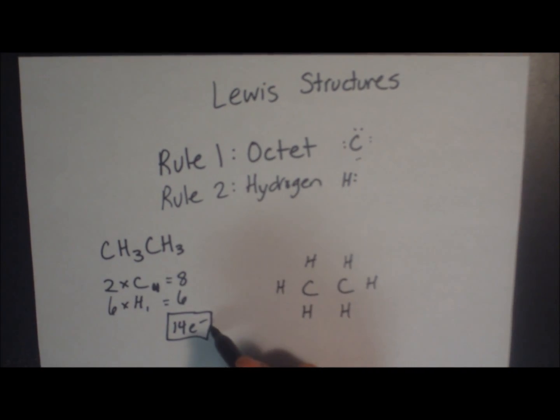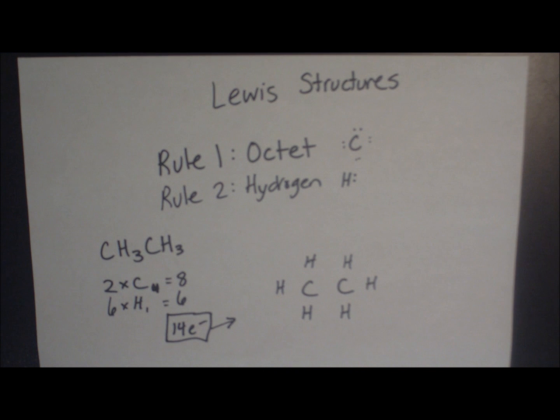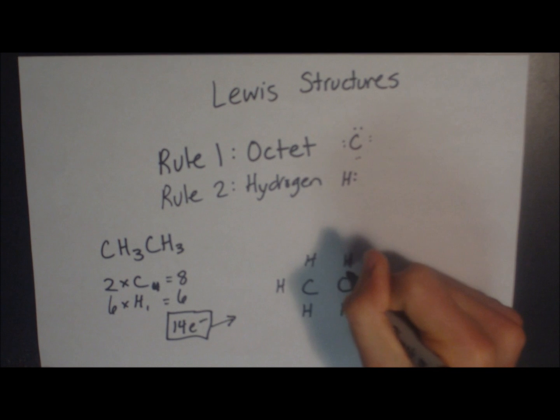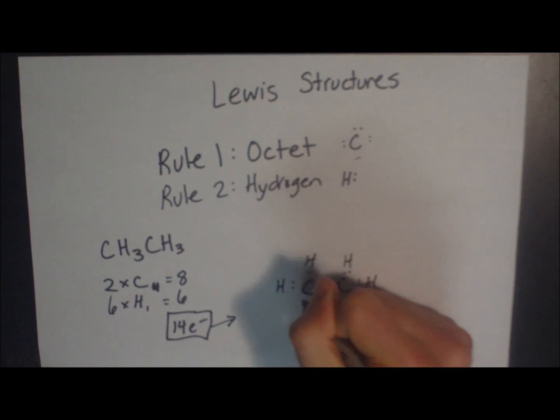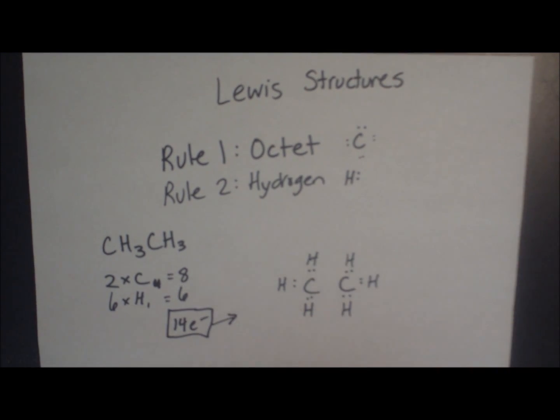Now, like I said, 14 electrons. Where to begin? I like to start with the hydrogens, because we know that they have two electrons on each. We've used two, four, six, eight, ten, twelve electrons total.